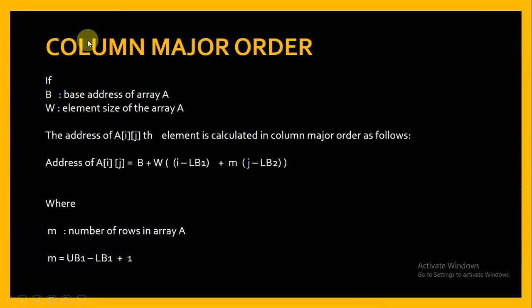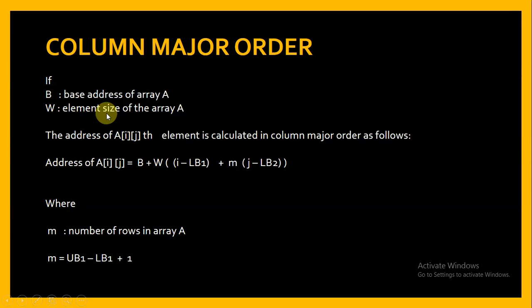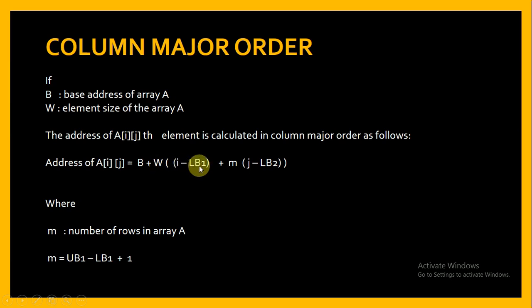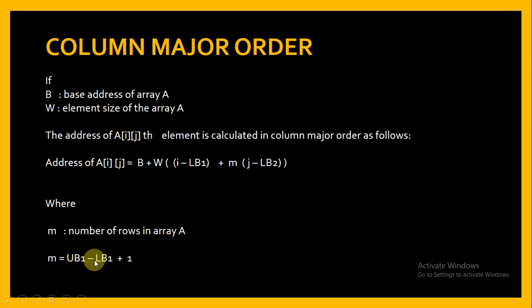Now let us talk about column major order. In column major order, if B is the base address and W is the element size, then the address of element A[I][J] is: Address = B + W * ((I - LB1) + M * (J - LB2)), where M = UB1 - LB1 + 1 is the number of rows.